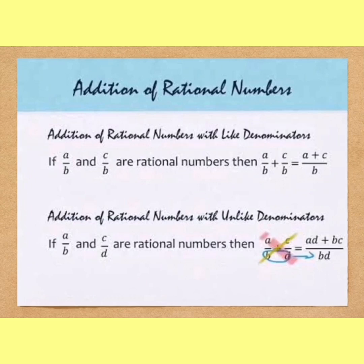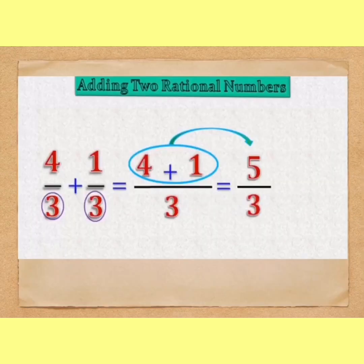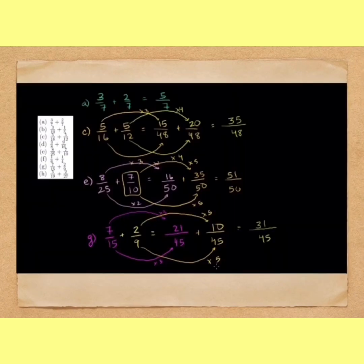you can add rational numbers. For example, like 4/3 plus 1/3 will be equal to 5/3 because denominators are same.